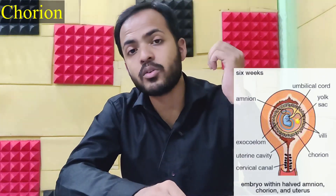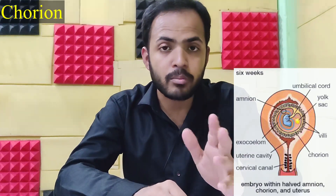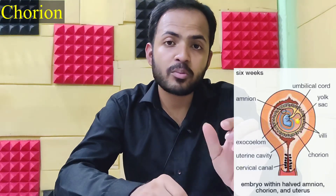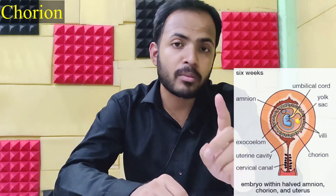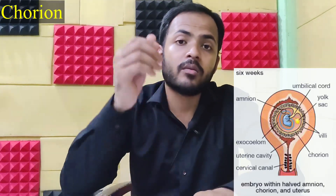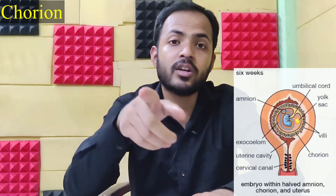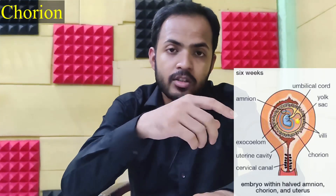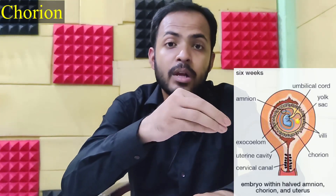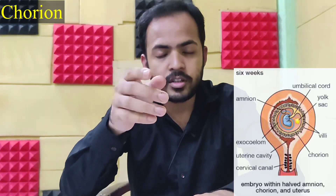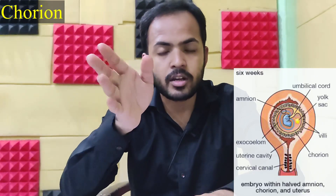In my placenta video I already talked about this Chorion and chorionic parts. It is formed by the somatopleuric layer of the extra-embryonic membrane and trophoblast. The somatopleuric layer is also known as the parietal layer. From this Chorion, villi formation occurs, and villi are very necessary to form the placenta.